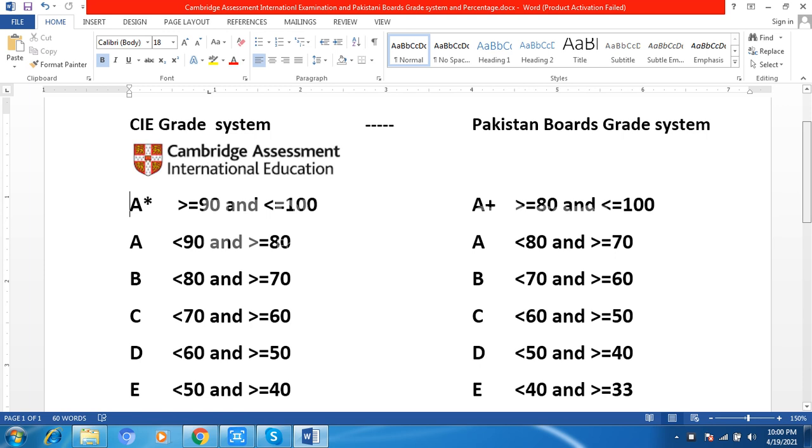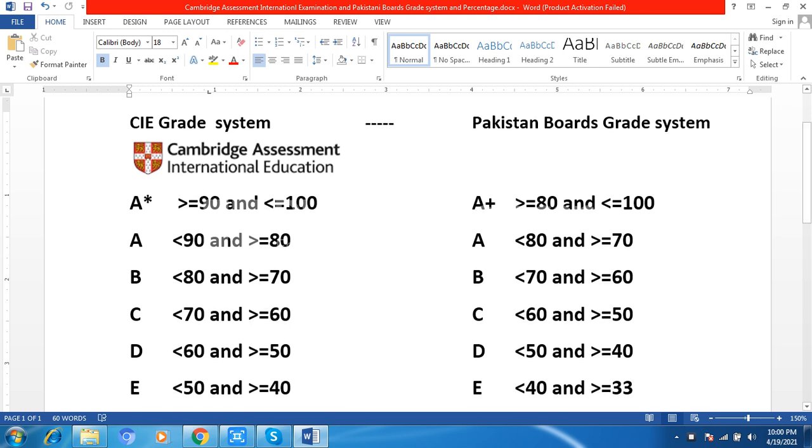Now, if you are going to achieve A star, you will take marks greater than or equal to 90 and less than or equal to 100. For A grade, less than 90 and greater than or equal to 80. For B grade, less than 80 and greater than or equal to 70. For C grade, less than 70 and greater than or equal to 60.